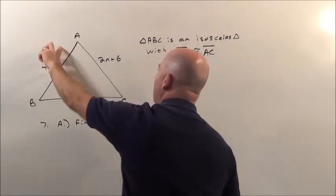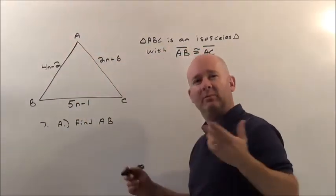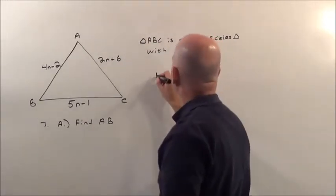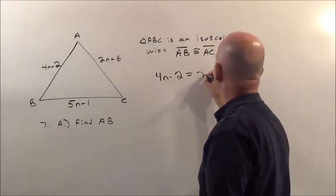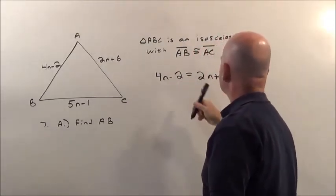Well if this guy and this guy are exactly the same, we just set them equal. That means 4n minus 2 is the exact same as 2n plus 6.